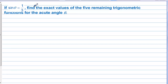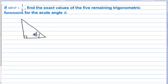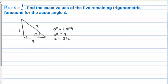If sine of theta equals one-third, find the exact values of the five remaining trigonometric functions for the acute angle theta. Let's draw a right triangle and pick this angle to be theta. Opposite would be 1 and hypotenuse would be 3. We need the adjacent side: A squared plus 1 equals 9, so A squared equals 8, and A equals two square root of two, which is the square root of 8. So this side equals two square root of two.